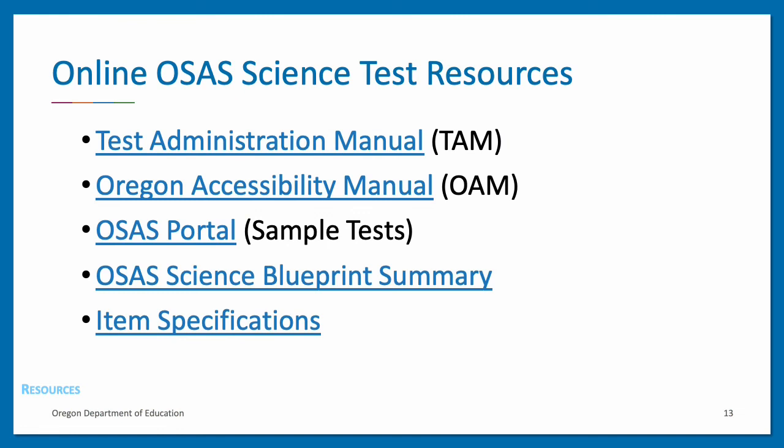Several resources exist to support teachers and students in understanding and preparing for the OSAS Science Test. The Test Administration Manual, Oregon Accessibility Manual, and OSAS Portal have been referenced on previous slides and are linked here. Links to the Science Test Blueprint Summary and Item Specifications are also provided here. These resources can help teachers better understand the OSAS Science Test and inform their instruction to better prepare students for success.